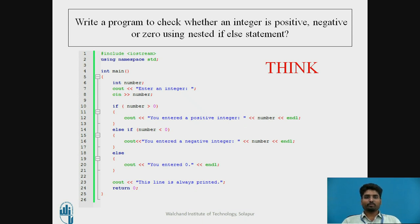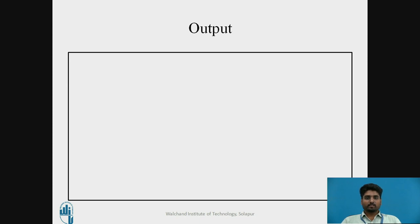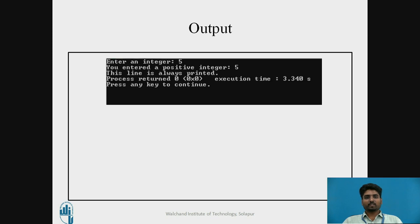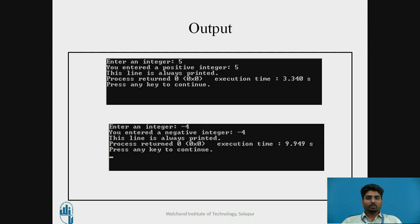We will see the output of the program. When the user enters a positive number, such as 5, the output is 'you entered a positive integer 5' and the always-printed line follows. If the user enters a negative number like -4, the output is 'you entered a negative integer -4' and the always-printed line follows.